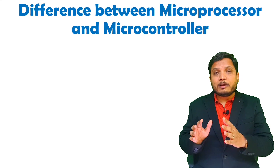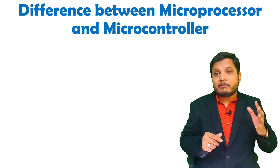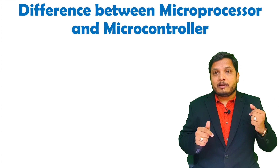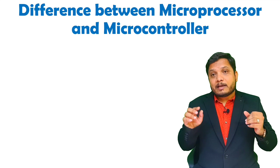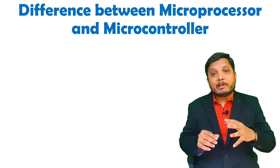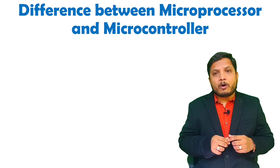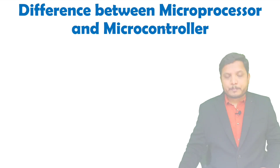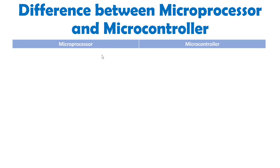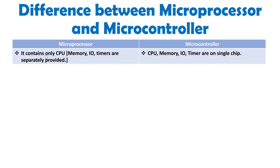With a microcontroller, there will be timers inside that single chip, while with a microprocessor you don't have a timer inside. A microcontroller also has input/output peripheral connections, which are not available with a microprocessor. In a microprocessor, only the CPU is present; memory, IO interfacing, and timers are separately provided. But in a microcontroller, the CPU, memory, IO, and timers are all available in a single chip.